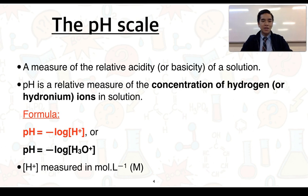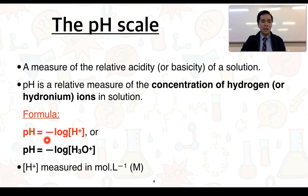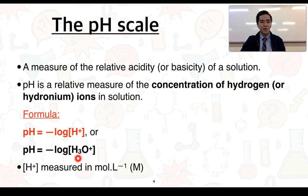What is the pH scale? It is essentially a measure of the relative acidity or basicity of a solution. pH is a relative measure of the concentration of hydrogen or hydronium ions in solution. The formula states that pH is equal to the negative log, or logarithm, of the concentration of H⁺ or H₃O⁺. The square brackets indicate concentration, and concentration of hydrogen ions is measured in moles per litre.